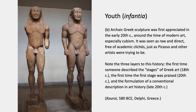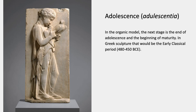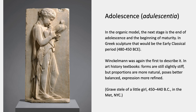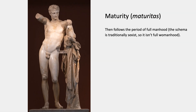These are usually called kouroi, just in case you want to look them up. The next stage is adolescence — adolescenteia — the beginning of maturity. In Greek sculpture that would be the early classical period, more or less 480 to 450 BCE. Winckelmann was again the first to describe it. In art history textbooks, what's said is that the poses are still slightly stiff but the proportions are more natural, the pose is much better balanced, and the expression is much more refined. That's a grave stele — a grave headstone — of a little girl from around 450 or 440 BCE. And then comes maturity — maturitas — the period of full manhood.